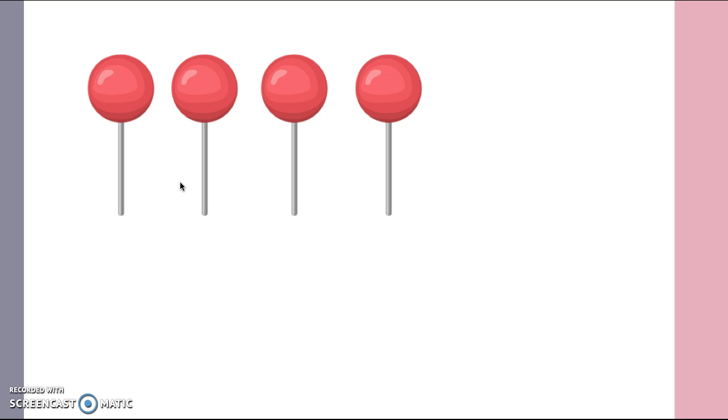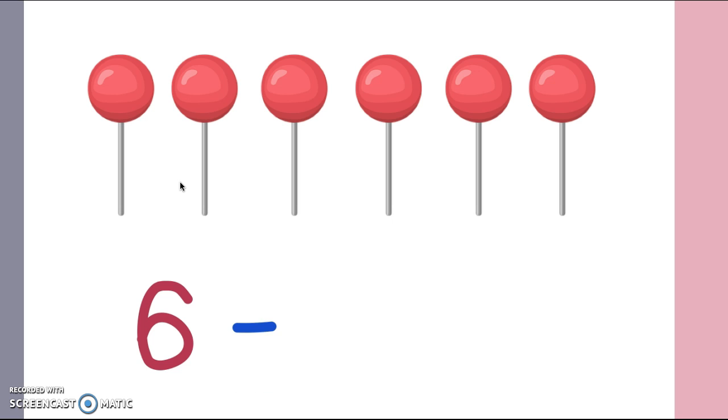So I started out by drawing the six original lollipops that I had. And I wanted to write a number sentence to show that I ate some, so I was taking away, right? Subtracting. So I started with my whole amount, which was six. That's what I started with. And then I got to use a minus sign because when you subtract or take away in your number sentence, you get to write the minus sign, which is just a little straight line. So six minus, and I ate two lollipops. So six minus two.